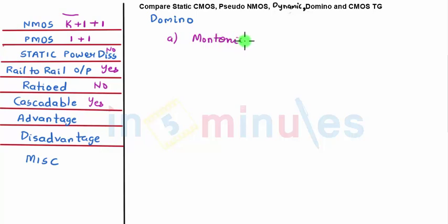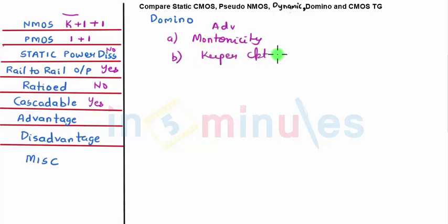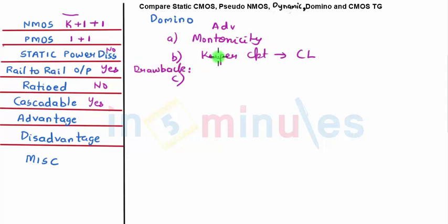Some advantages of domino: it overcomes the monotonicity problem that dynamic circuits had. With the help of charge keeper circuits, it can also prevent charge leakage. The only drawback is that domino gates are non-inverting, because at every output of a dynamic stage you need to connect an inverter.